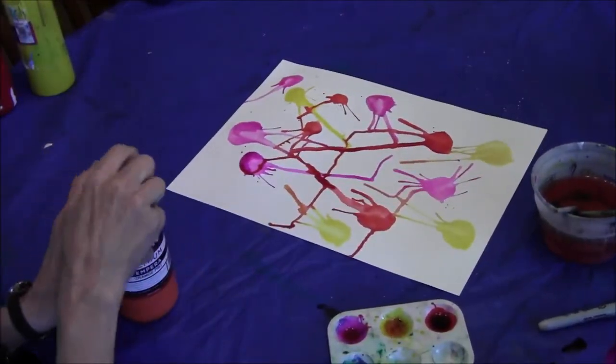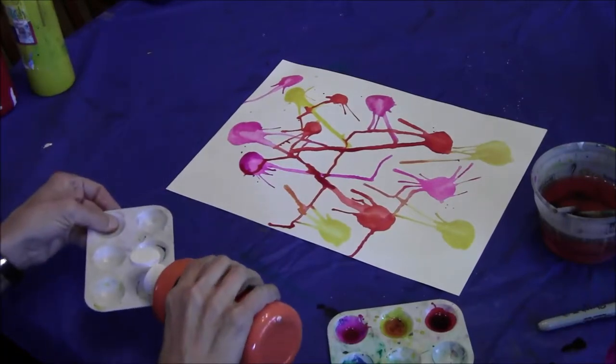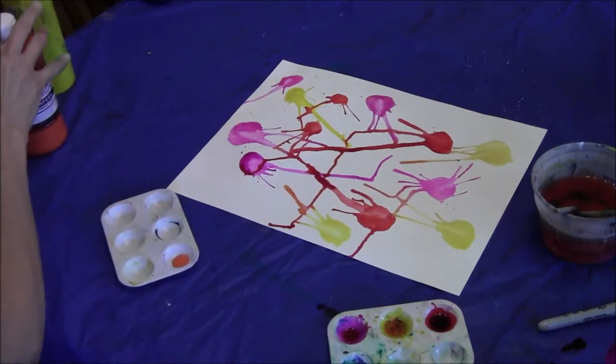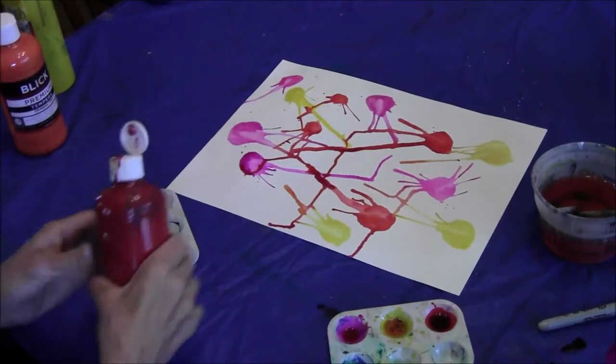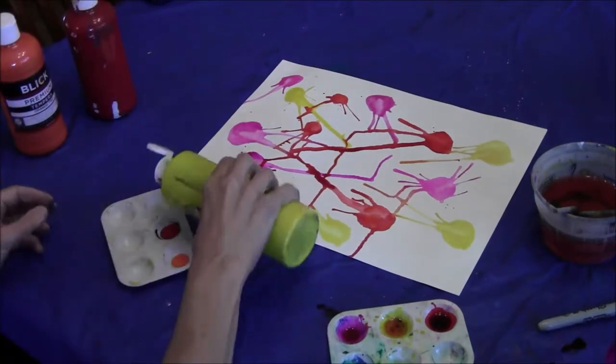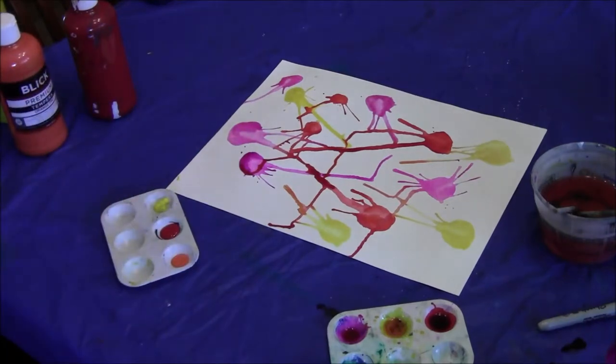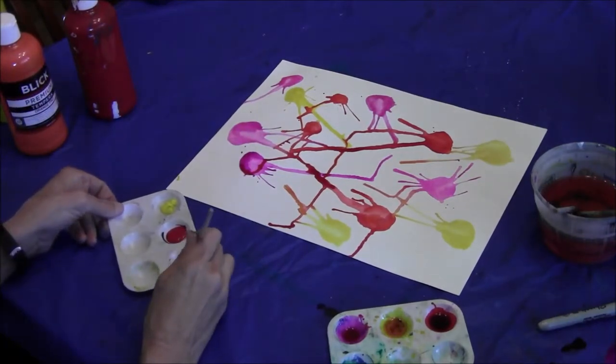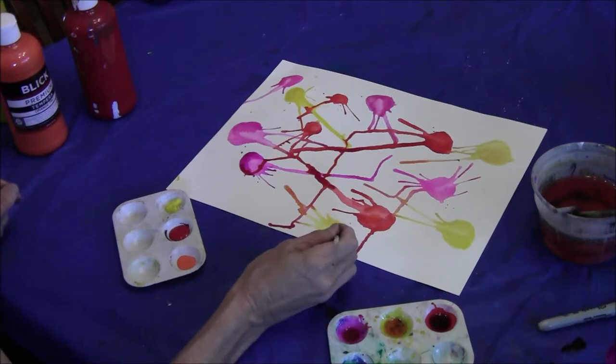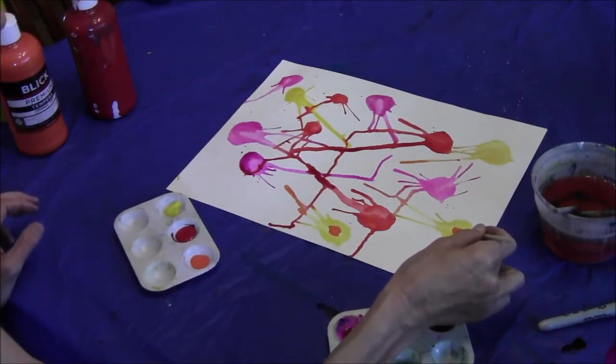And then once I'm done, I'll add in the cell bodies. So I'll take tempera paint and put in the suggestion of a cell body for each of our neurons.